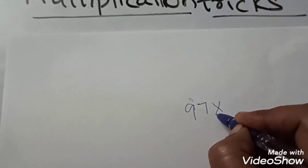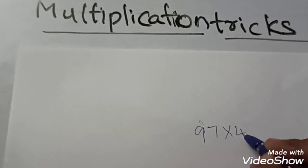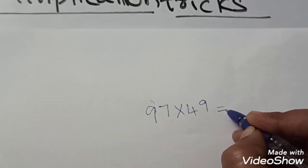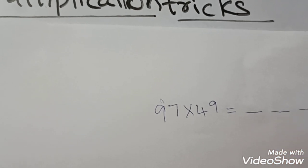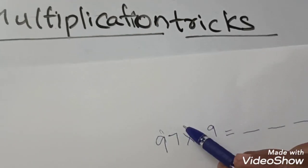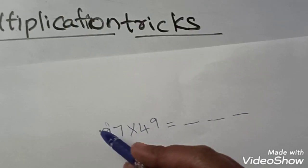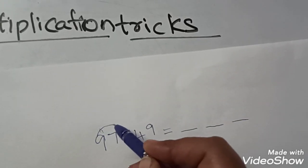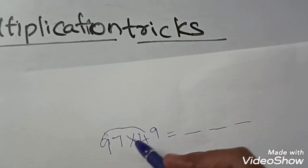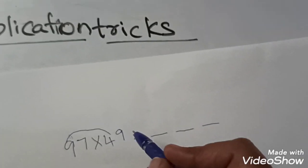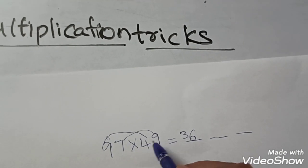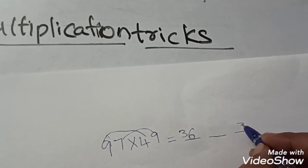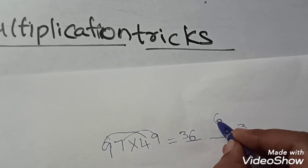If we take another complicated problem, 97 into 49, here also we have to follow the same steps. First, you draw 3 lines in the answer. First, multiply tenth place and tenth place. Nine fours are 36. Ones place and ones place, second step is seven nines are 63. Write 3 here and 6 here.